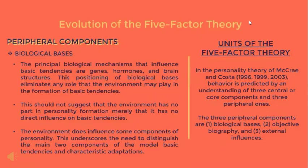The three peripheral components are biological bases, objective biography, and external influences. The five-factor theory rests on a single causal influence on personality traits: biology. The principal biological mechanisms are genes, hormones, and brain structures. Advances in behavioral genetics and brain imaging continue to fill in the details. This positioning of biological bases eliminates any direct role that the environment may play in the formation of basic tendencies, though the environment does influence characteristic adaptations.